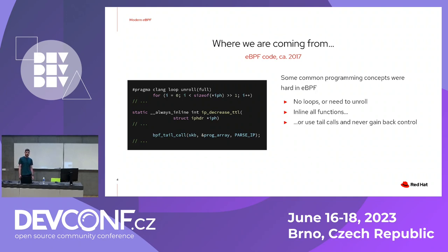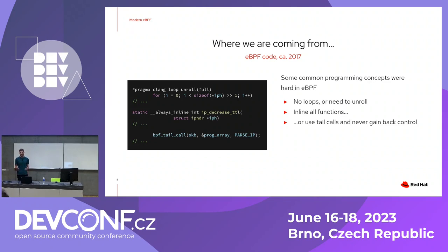Another thing that wasn't really possible was calling functions — you could not just call a function like you would in any other language. The only option was to inline all functions, copying their contents into your main program for a constant flow of execution. Or you could use tail calls, which jump to another eBPF program at the end of yours, but you never return to the previous function, so it's not really a function call.